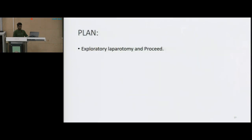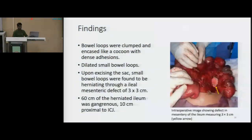Intraoperatively, we found that the bowel loops were clumped and encased like a cocoon with dense adhesions. The bowel loops were gradually delineated by adhesiolysis. Upon dissecting and accessing the sac, surprisingly, the bowel loops were found dilated and herniated through a 3x3 cm defect in the mesentery of the ileum, which you can see here — the defect is visible here.